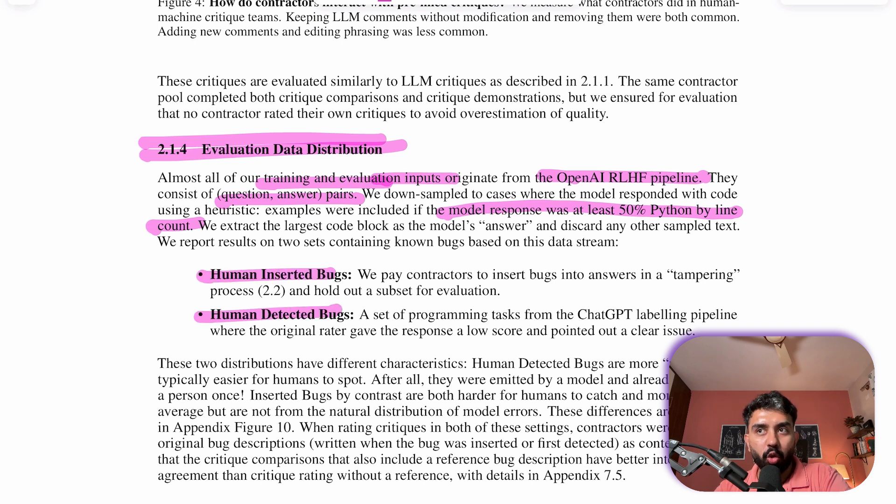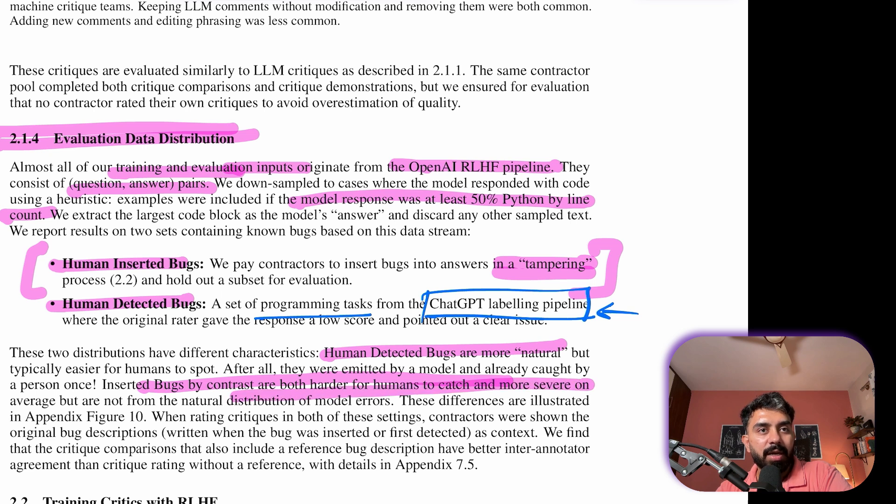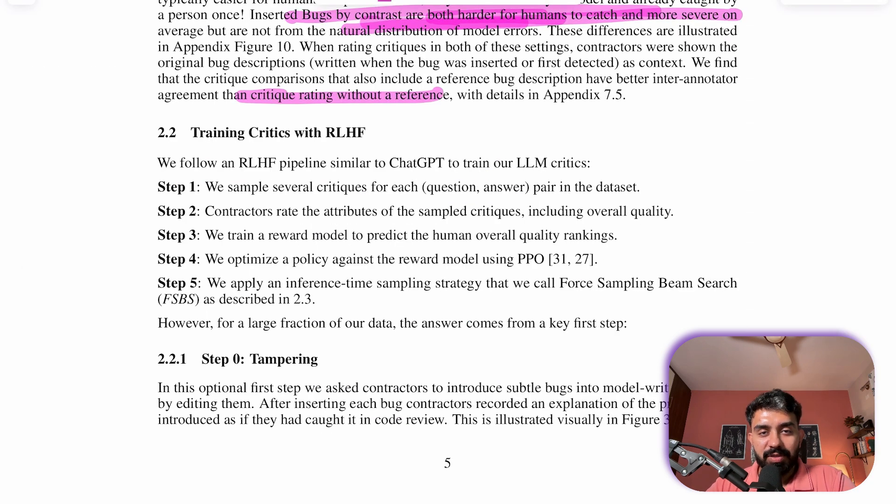Now they worked with two sets of data containing known bugs. First, the human inserted bugs, where the contractors were paid to insert bugs into the answers. And second, the human detected bugs, where the programming tasks flagged by original raters in the ChatGPT labeling pipeline. Human detected bugs are more natural and usually easier for humans to spot since they were already caught once, whereas inserted bugs are tougher and more severe.